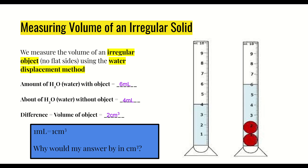The result is 2 centimeters cubed. Notice the unit changed from milliliters to centimeters cubed — that's because the object is a solid. Recall that one milliliter equals one cubic centimeter, so it's a simple unit swap. The milliliters in the graduated cylinder stay as milliliters for the total water volume, but when reporting the volume of the solid itself, we write centimeters cubed. This tells us the reported volume is for a solid, not a liquid.